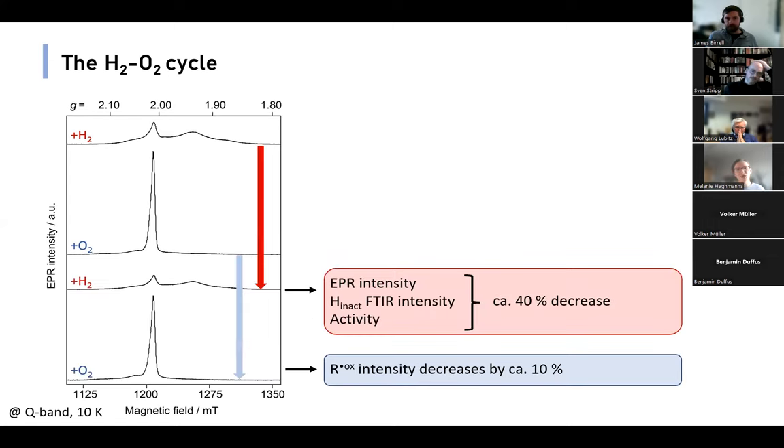As was shown by FTIR, CbA5H can undergo several cycles of oxidative inactivation and reductive reactivation. We reproduced this with the H2O2 cycle and observed it with EPR. In the H2-reduced state, we mainly see the paramagnetic species I just showed. Upon oxygen exposure, however, the generation of R^ox is significantly enhanced. If we repeat the cycle again, in the reduced state, the EPR intensity in accordance with the FTIR intensity of the inactive state decreases by approximately 40%.